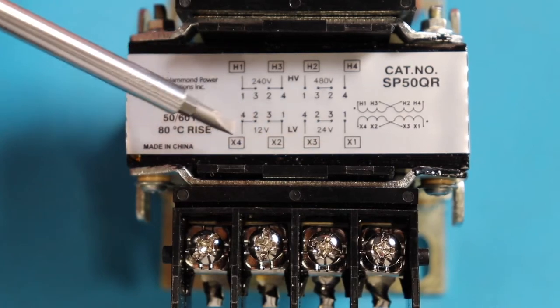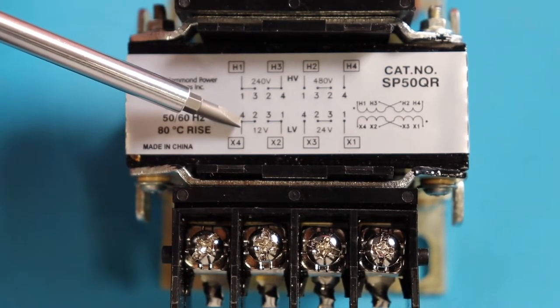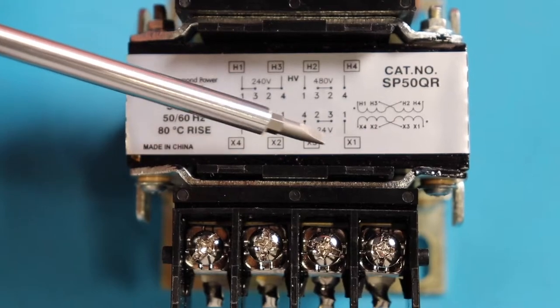For our connection points, for our output, same as the primary side, it's 4 and 1 and 4 and 1.